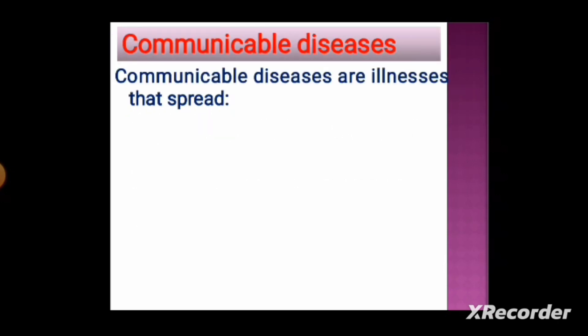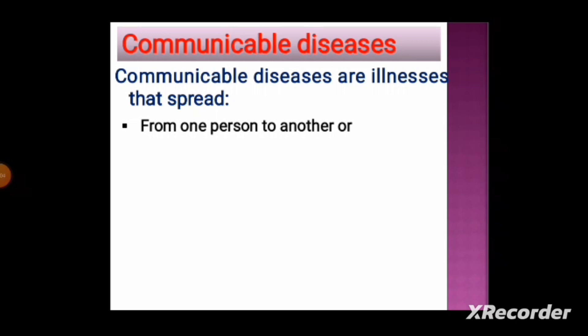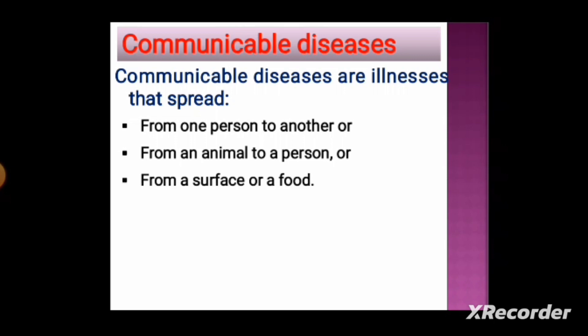Communicable diseases may spread from one person to another — for example, flu. They can also spread from an animal to a person, which are called zoonotic diseases, such as rabies and leptospirosis. A third route is from a surface, food, or water — these include foodborne and waterborne diseases such as salmonellosis and shigellosis.